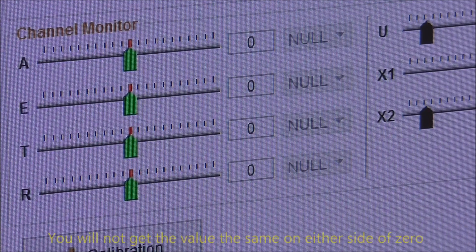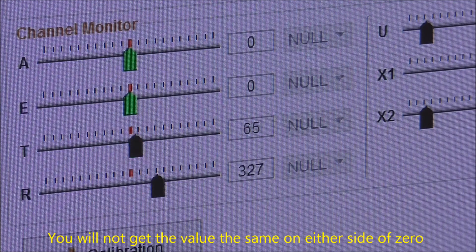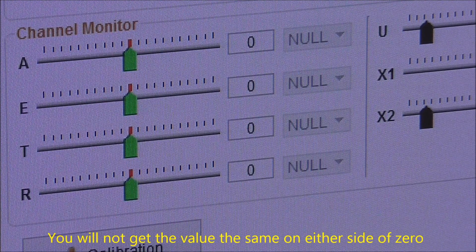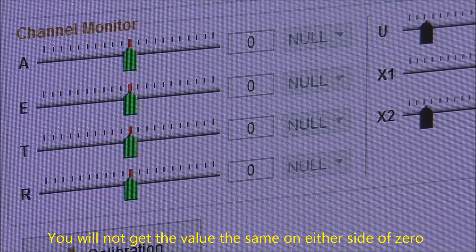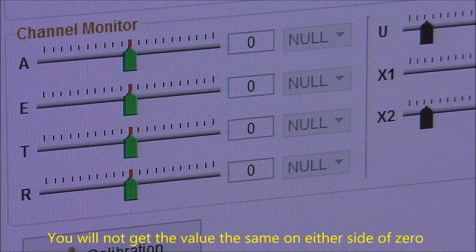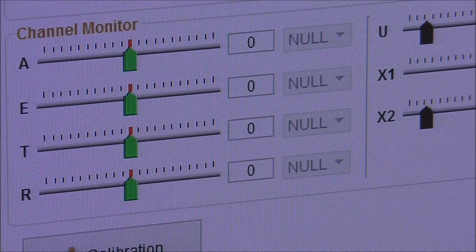Because of the makeup of the potentiometer in the joystick you will not always get the value to be the same on either side of the zero. So one side will always be or may be a little faster than the other. This is normal.